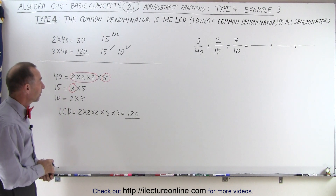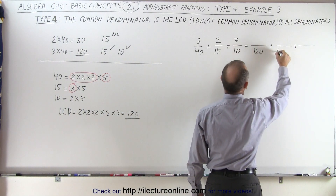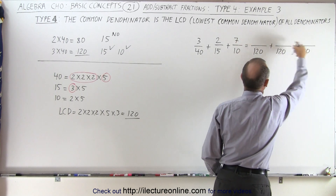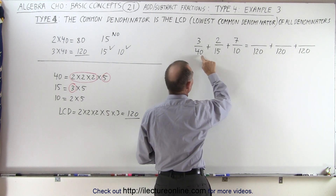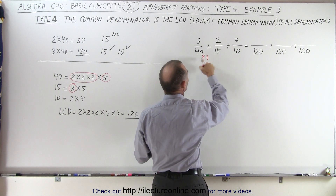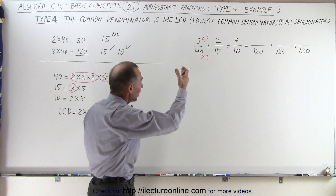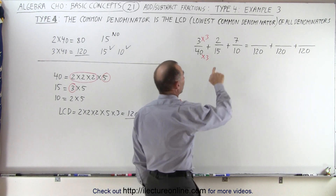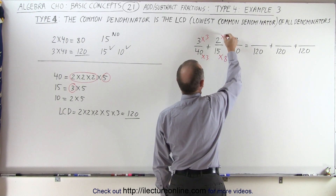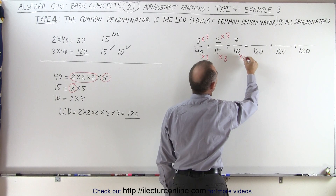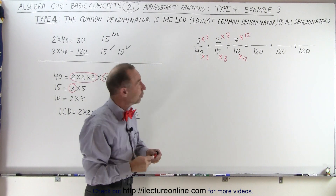It seems like each method took about the same amount of time. So now we know we're going to have three fractions with a new denominator of 120. To find the corresponding numerators: to get from 40 to 120, I have to multiply the denominator by 3, which means I also multiply the numerator by 3. To turn 15 into 120, I multiply by 8, so I do the same with the numerator. And 10 times 12 gives us 120, so I multiply that numerator by 12 as well.